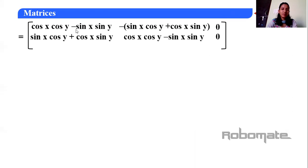Now recall the trigonometric addition formulas. We can see that cos x·cos y − sin x·sin y equals cos(x+y), and sin x·cos y + cos x·sin y equals sin(x+y). These are the standard compound angle formulas for cos(x+y) and sin(x+y).